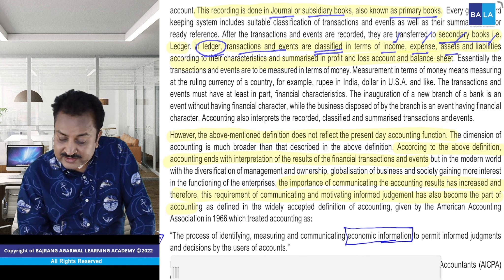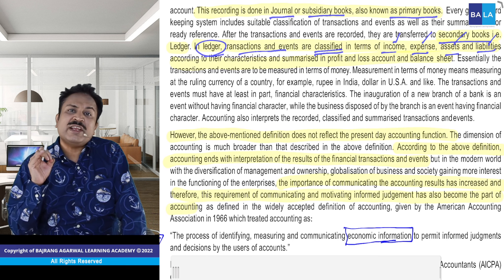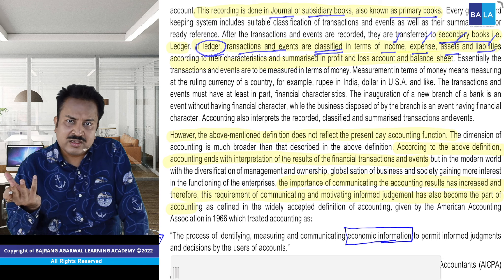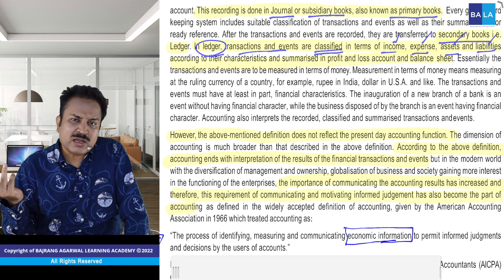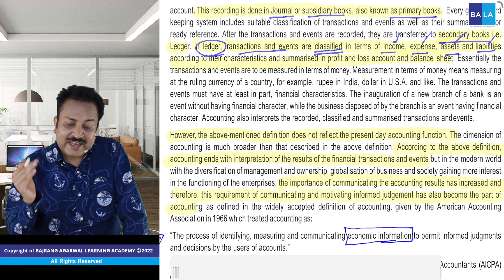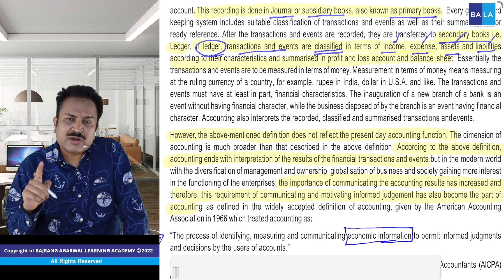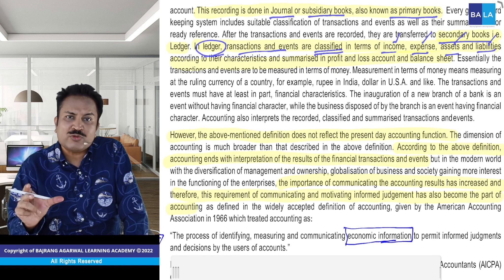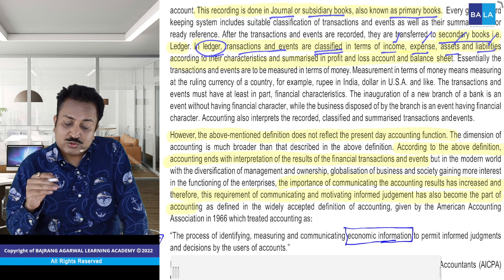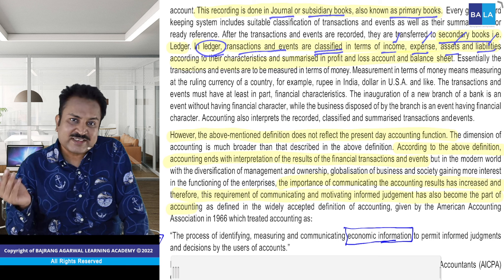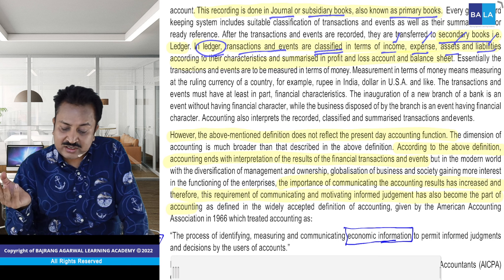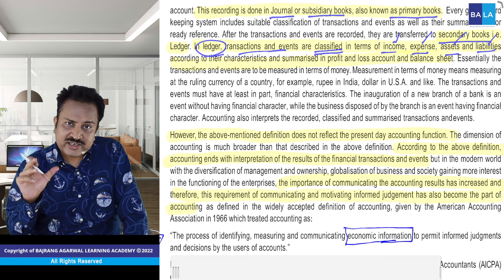Classify kaise karte hain: income hai, expense hai, asset hai ya liabilities hai — toh chaar jagah classify hota hai. Income hai, expense hai, asset hai ya liability hai. Koi bhi particular transaction jo bhi hua hai — yeh transaction income hai, expense hai, asset hai, ya liability hai. Asset and liability — jo particular accounting period — generally hum accounting period ek saal karte hain — ek saal ke aage ka kuch benefit hai toh woh asset hai. Ek saal ke baad ka kuch dena hai, dendari hai, toh liability hai.